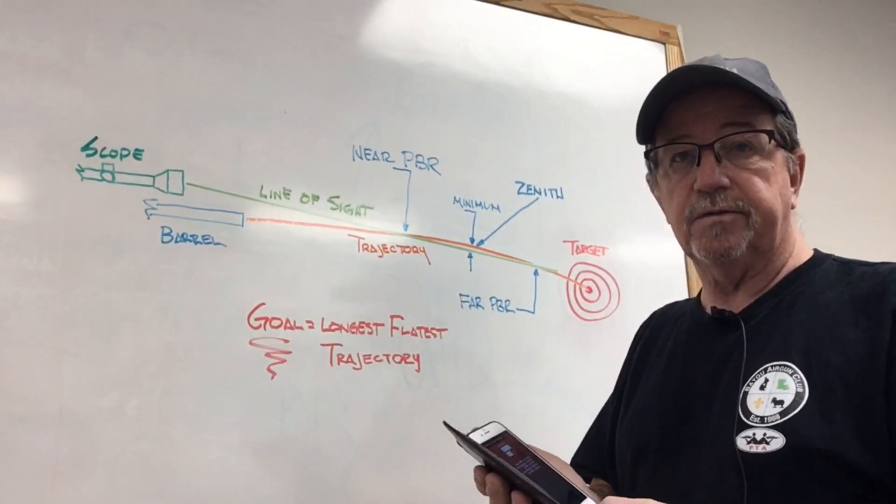Well everyone, I hope that segment was helpful and beneficial to you. Knowing what your zero is and what your holdovers are is very important to having success in shooting field target, hunter field target in particular. It's fairly easy to do, but knowing where to start and how to do it is very important.